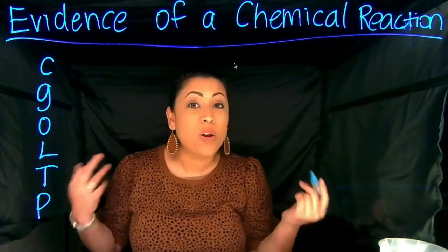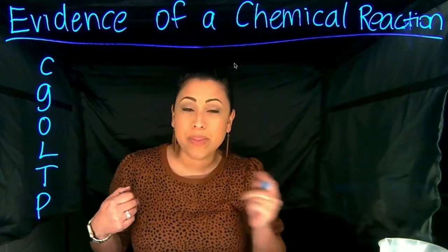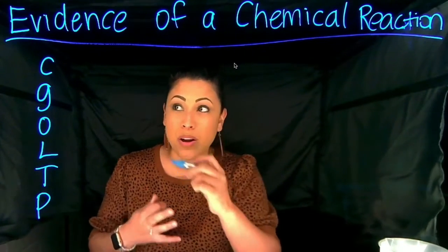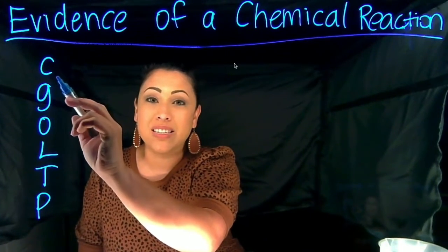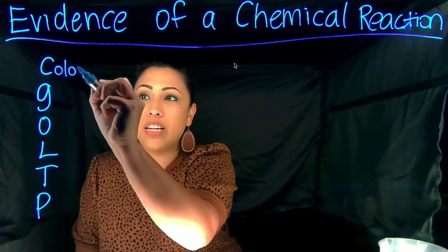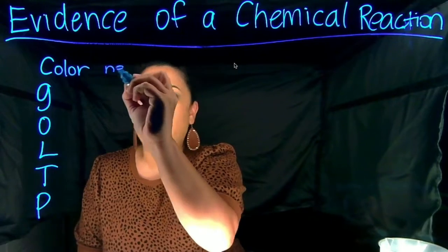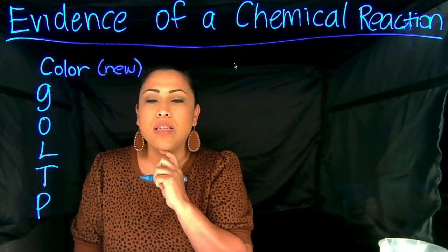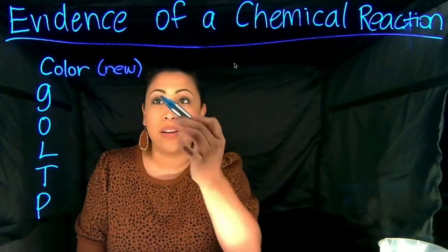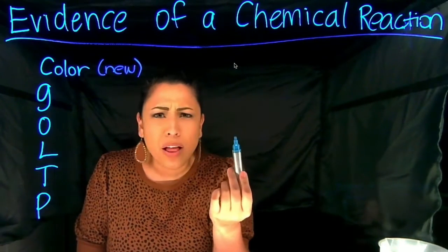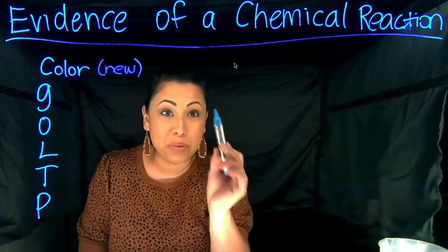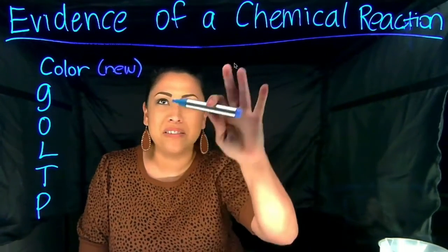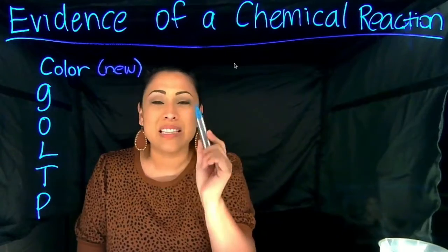What do all those letters stand for? Let's think about our piece of paper. When we burned the paper, what changed? We had a color change. So the C is going to be a new color — not a color that we added. Like if I write on this board with the blue marker, that's not a new color, that's blue turning into blue. So that's not a new color.